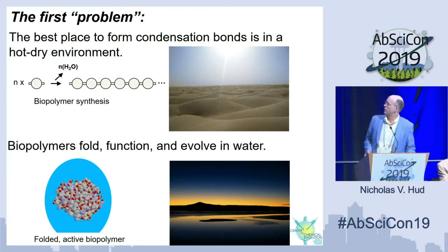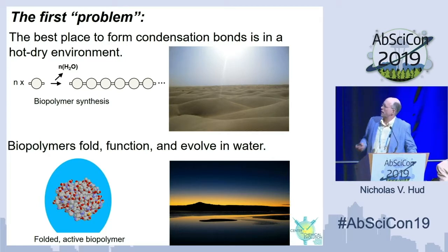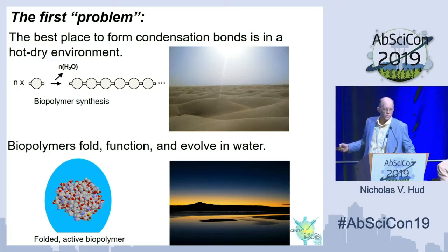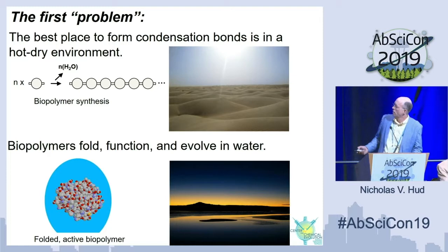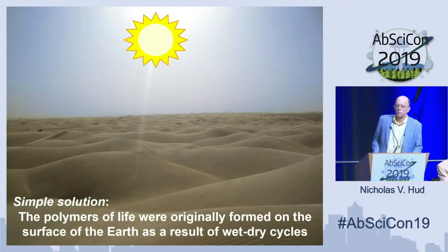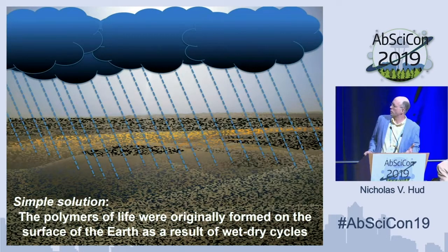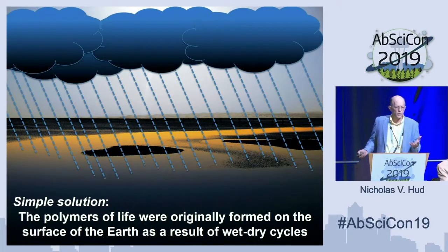Those types of bonds present the first problem we had to address: the best place to form condensation bonds is in a hot, dry environment, because if you want to drive this reaction to the right you want to get rid of water. So an arid surface is the best place — but biopolymers fold, function, and evolve in water. A simple solution is that the polymers of life were originally formed on the surface of the earth as a result of wet-dry cycles.